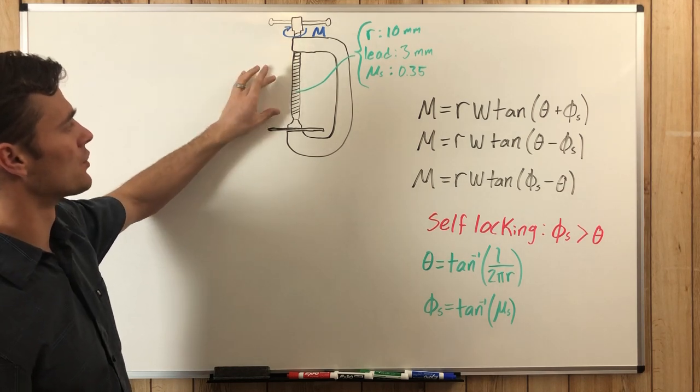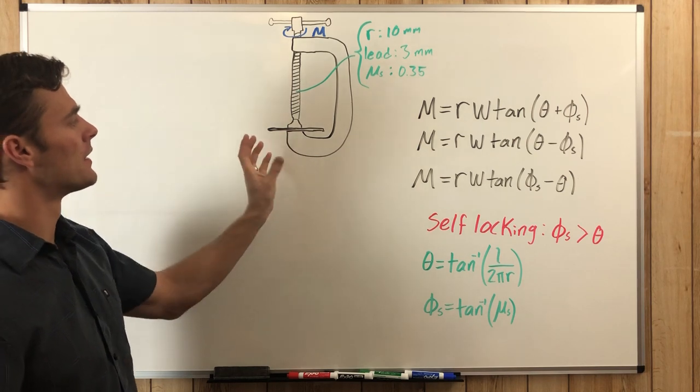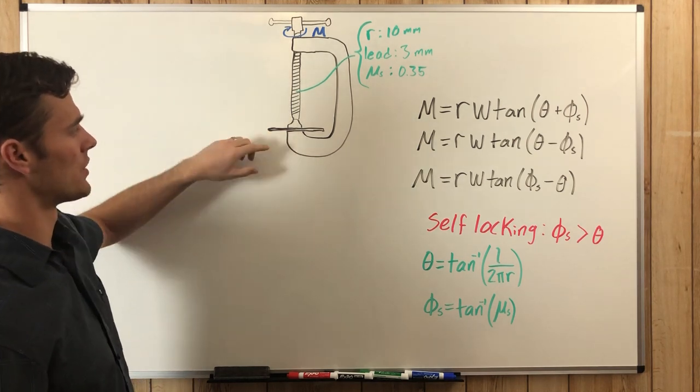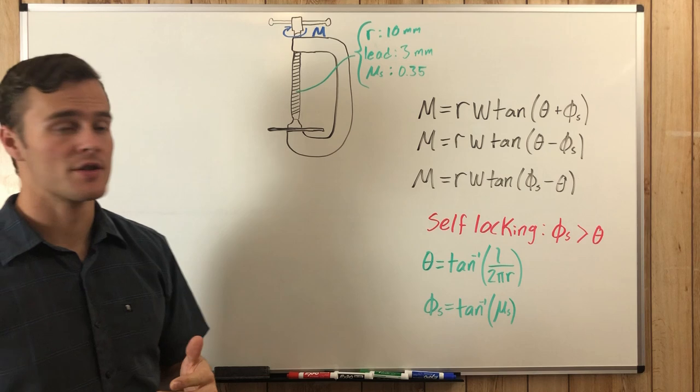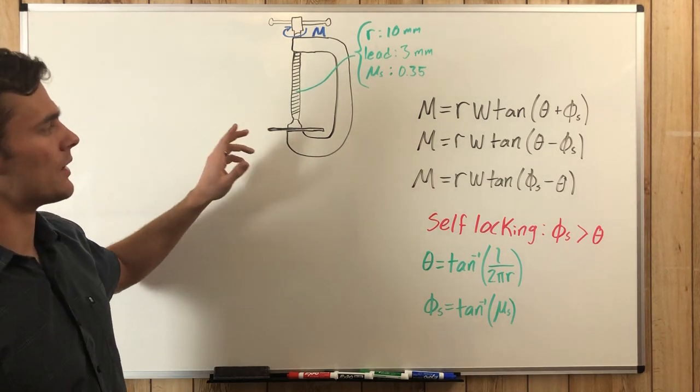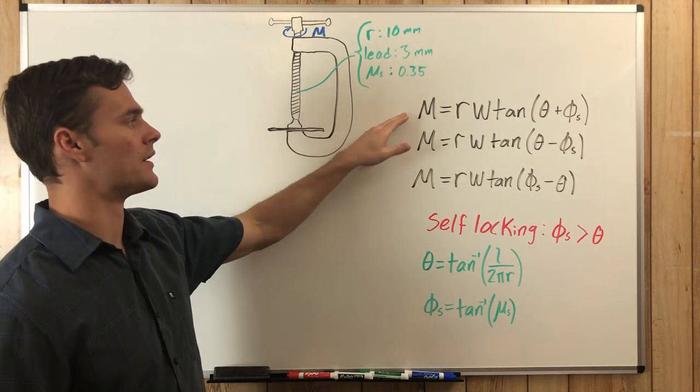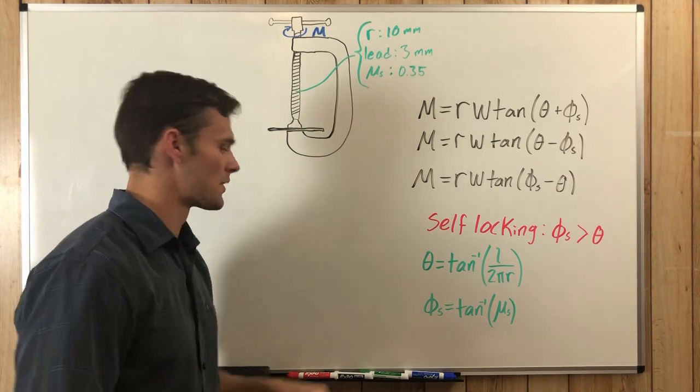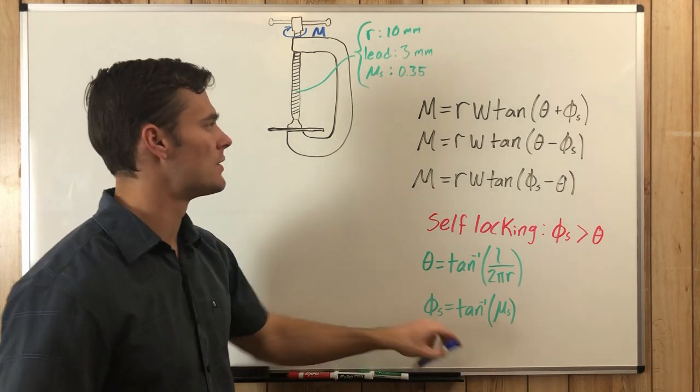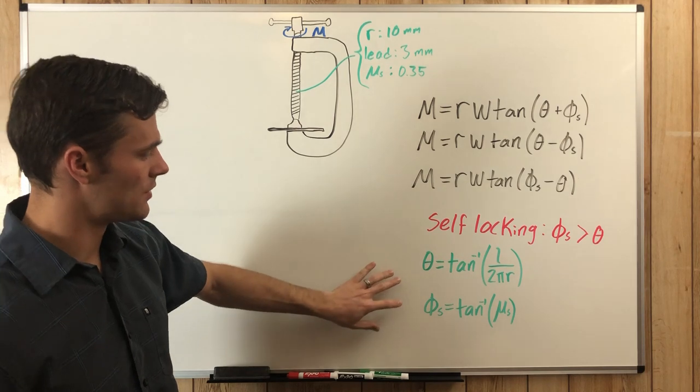So that means that W, which is the compression force, is going to be in the opposite direction of impending motion. So we are going to be using this equation. The first thing we need to do is solve for phi and theta.